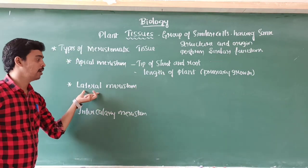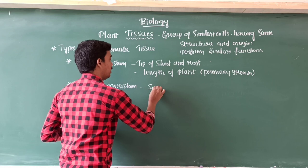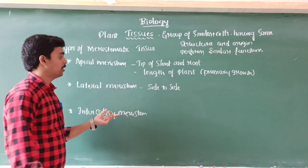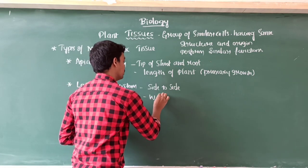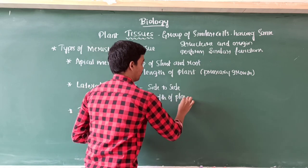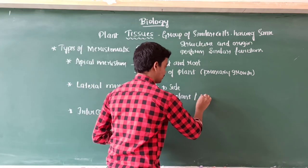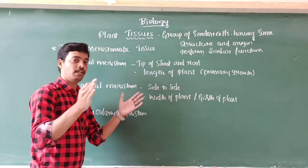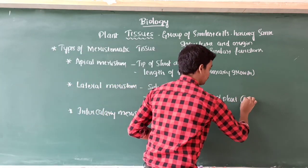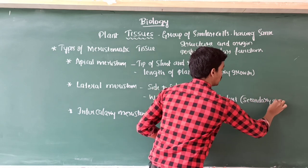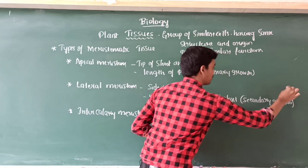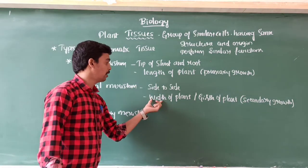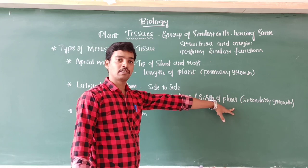The next type is lateral meristem. It is present on either side of the plant body. It causes the increase in width of the plant body. In other words, it is called secondary growth.